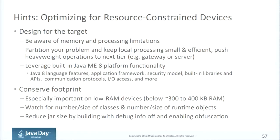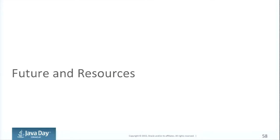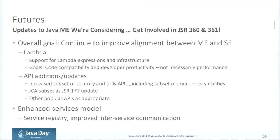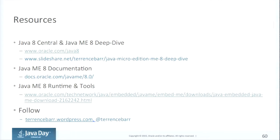Leverage all the Java ME platform functionality you have. The idea is to have the device IO APIs available on Java SE in the future. Always conserve your footprint. Looking ahead: Lambdas are not there yet for Java ME embedded but it's a work in progress. The goal is compatibility and developer productivity, with API additions and updates coming. I recommend following Terence Barr, the project manager for Java ME. Documentation, tools, and runtime can be found online. Thank you very much for your time.